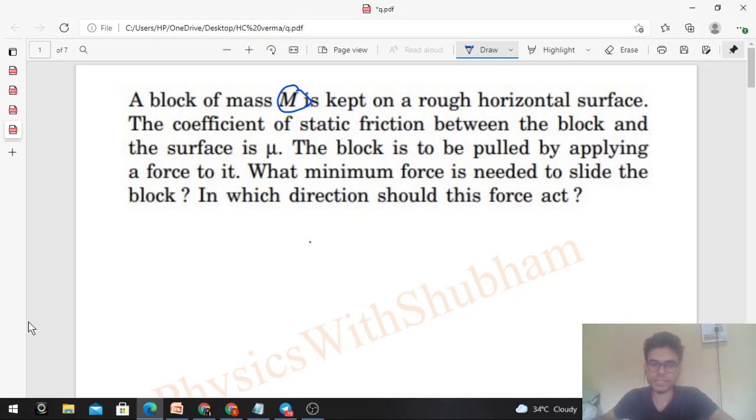So this is a block, capital M, and this is the surface. The coefficient of friction between the block and the surface is μ. We have to get a force - you can apply the force in any direction. Let's say we apply it at angle θ. What should be the value of F minimum to move this block, and we have to find this θ also?